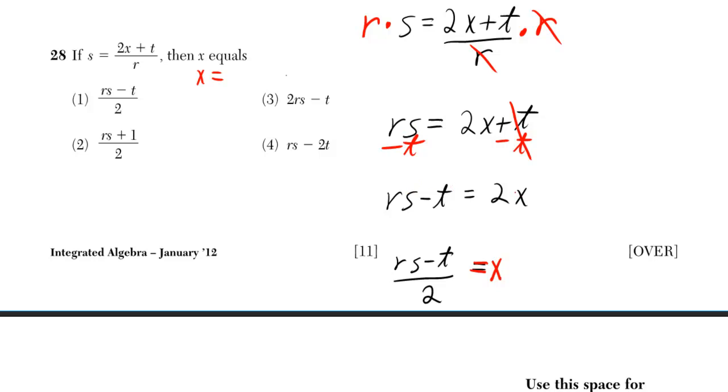Now I'm left with 2x. Remember, that really means x times 2. So how do I get rid of a times 2? I can do the opposite, a divide by 2. The 2's cancel, and then this right here is my final answer, but I rewrote it at the bottom, so that way x equals rs minus t over 2.